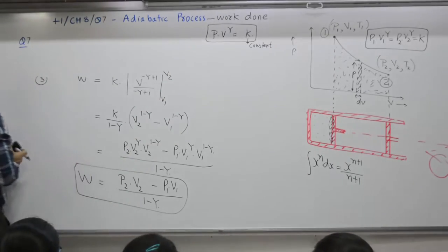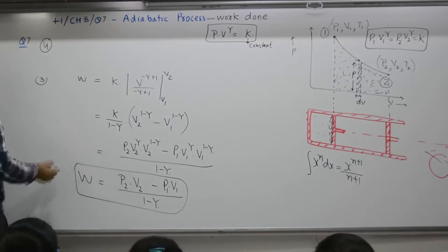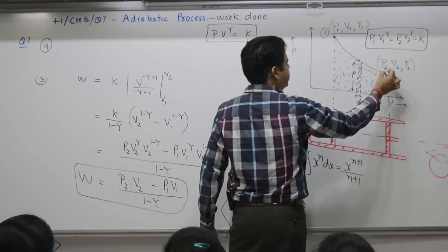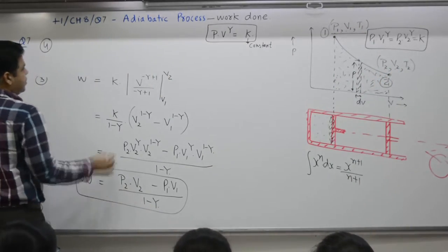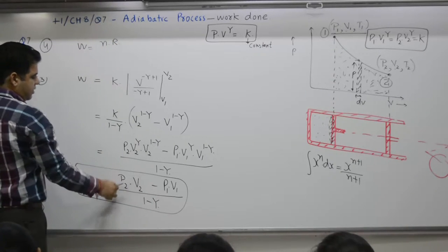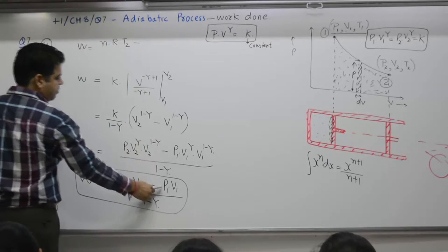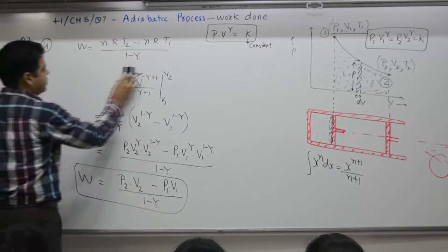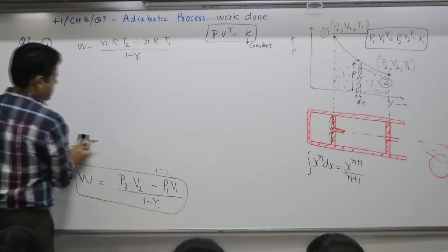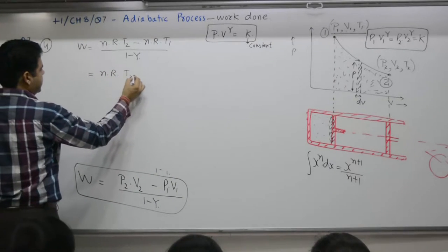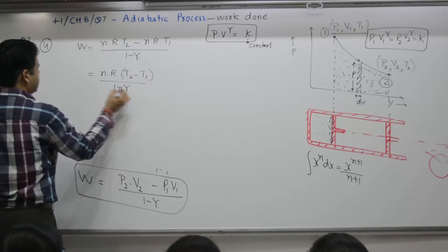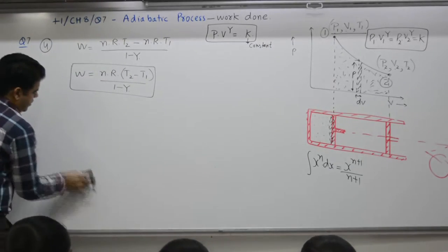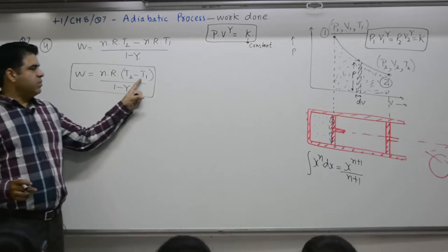Different expression: you can write it in this form also. PV equals nRT. At this point, P1·V1 equals nRT1. At this point, P2·V2 equals nRT2. What you get is nR(T2-T1) over (1-γ). Work done equals nR(T2-T1) over (1-γ). You will find for expansion T2 will come out to be less than T1. This part is negative.